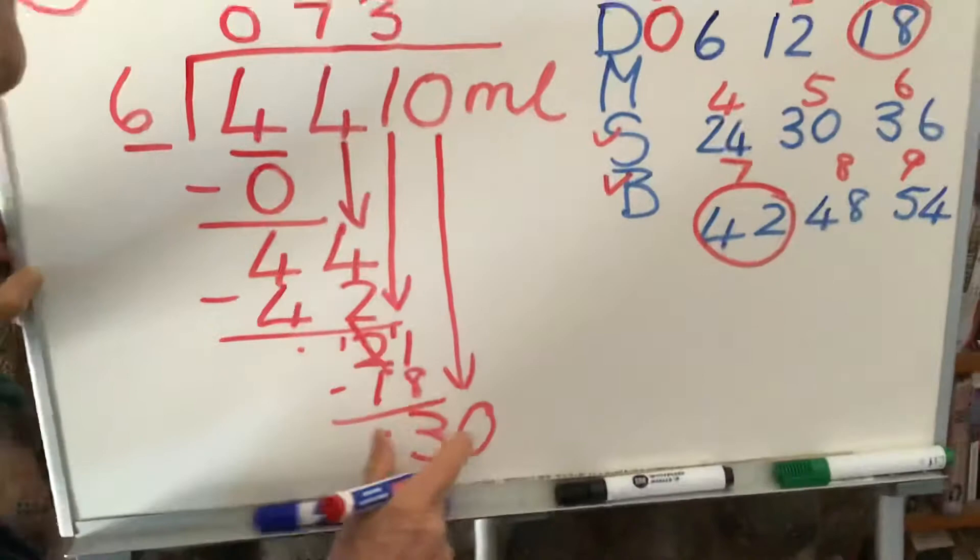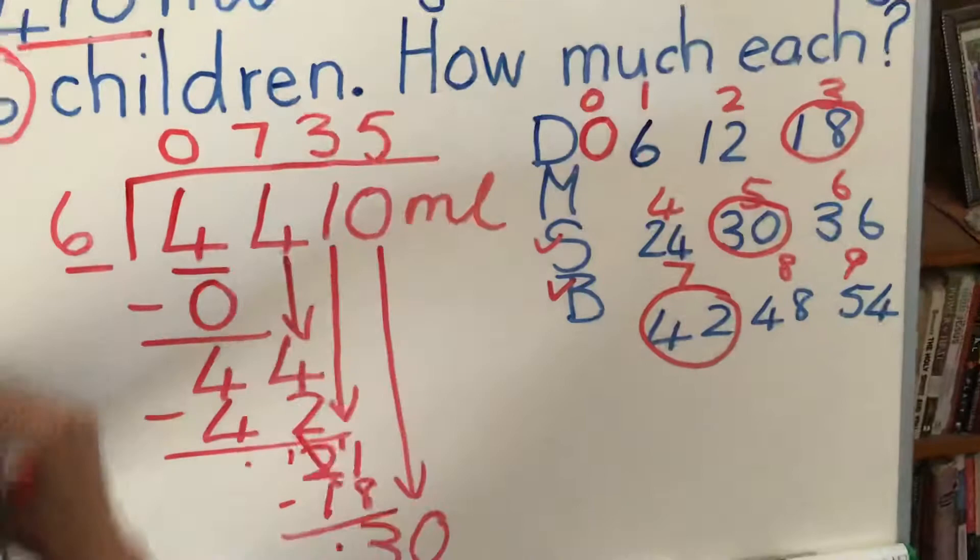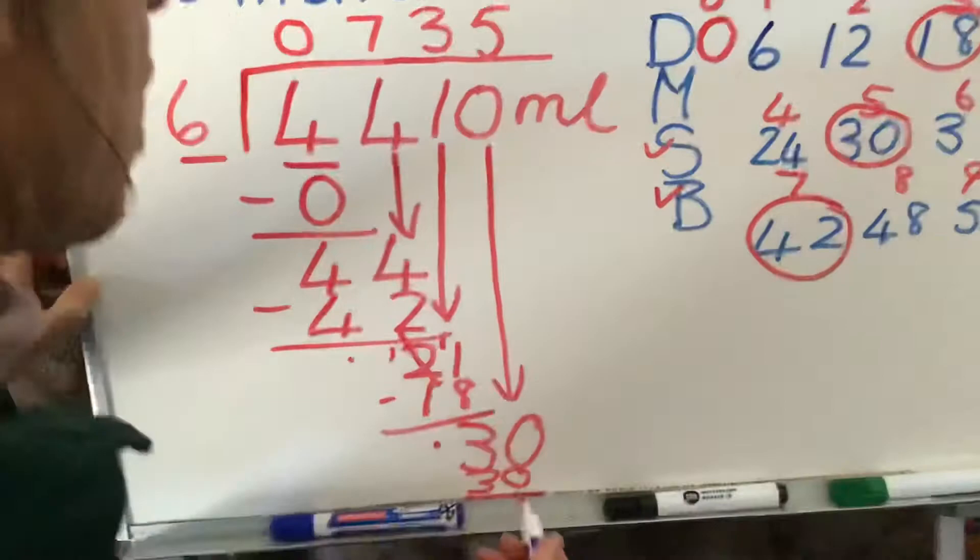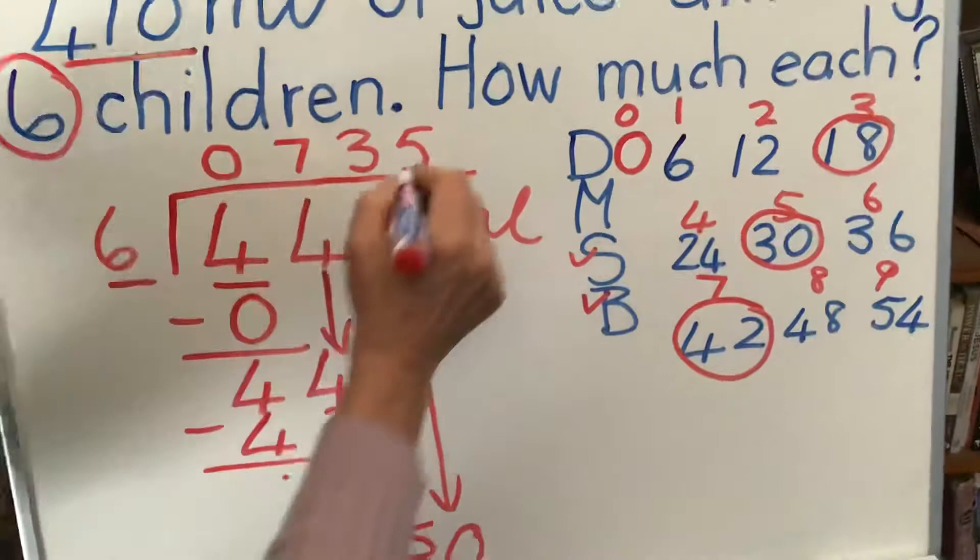Let's have a look. Can we find 30? Yes, there it is. 5 times 6 is 30 which we're going to squeeze in there at the bottom. 30 minus 30 is 0, so we've got nothing left over. So our answer is 735 milliliters.